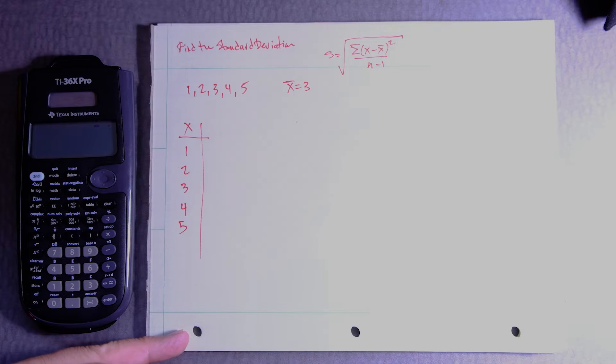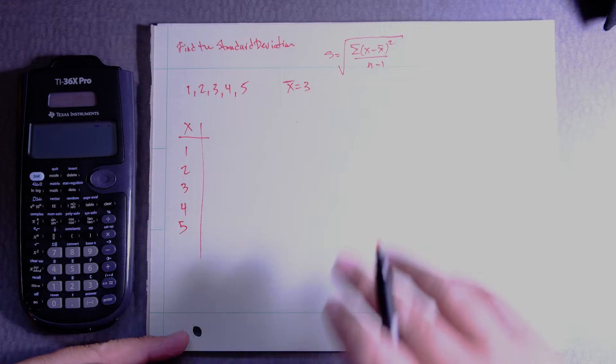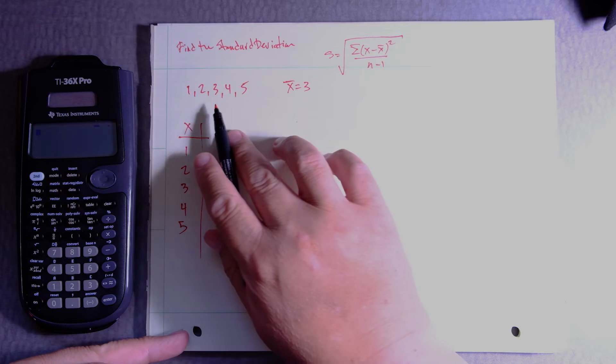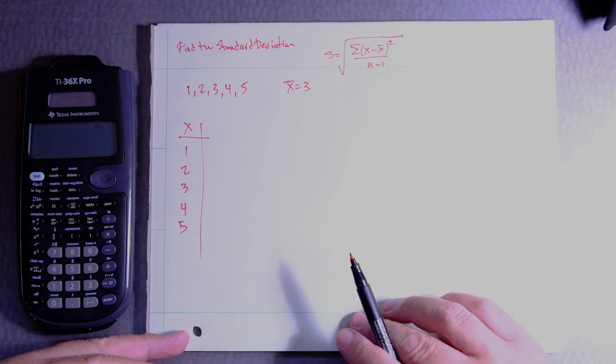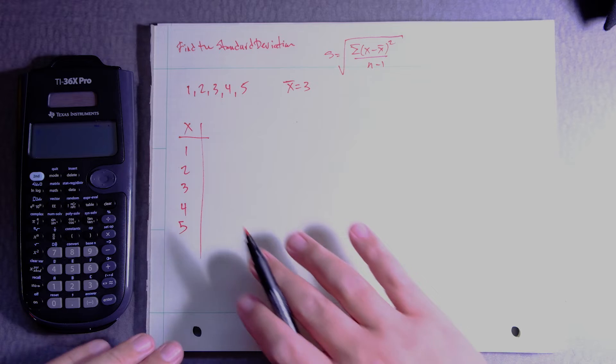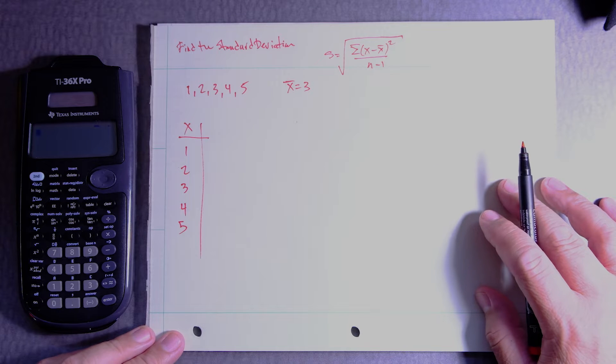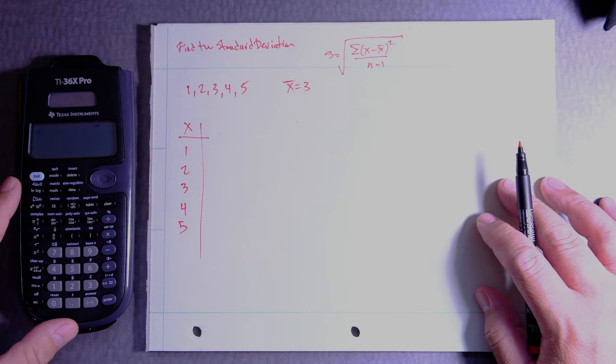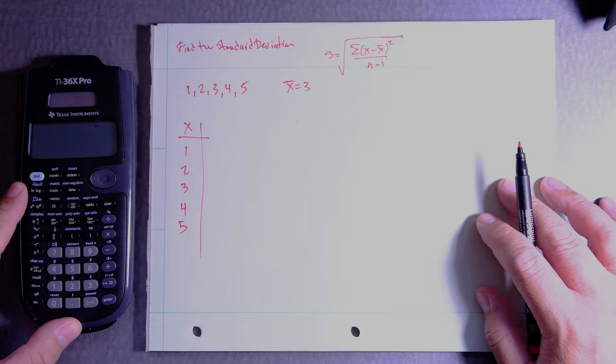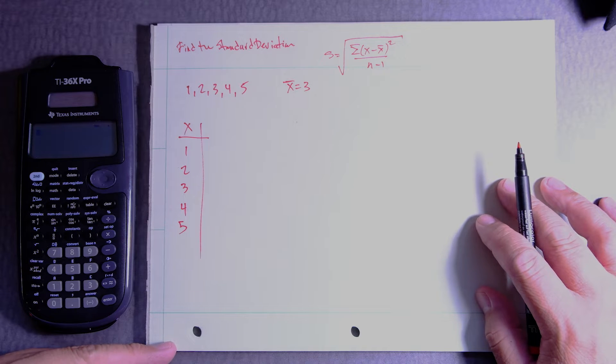In this video we're going to find the standard deviation of a data set 1, 2, 3, 4, 5. What I'm going to do is show you how to do it by hand and then we're going to use the calculator to verify the answer.